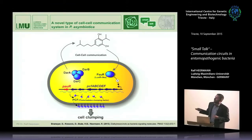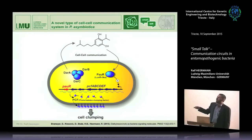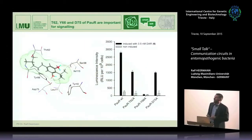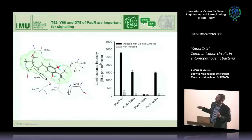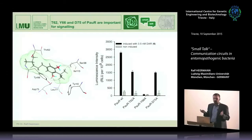Summarizing this part: in Photorhabdus asymbiotica, instead of LUX-I or PPYS, the DAR synthesis operon makes the signaling molecule — in this case dialkylresorcinol — which upon high cell densities binds to PAO-R, the PLU-R homolog in Photorhabdus asymbiotica, activating expression of the PCF operon, making cell clumping and contributing to pathogenicity. In PAO-R, we found the few amino acids forming the binding pocket, and when we exchange these amino acid residues, reporter activity goes down — indicating dialkylresorcinol is directly bound by PAO-R and these amino acids are involved in forming the binding pocket.